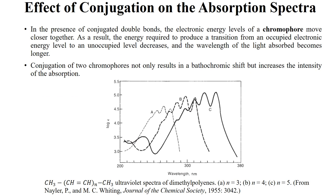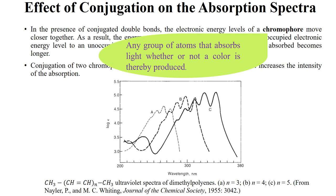Now we will talk about chromophores. A chromophore is a group of atoms that absorbs light, whether or not a color is thereby produced. In a molecule, certain groups or conjugations make it capable of absorbing energy — such groups or collections of groups are called chromophores. A molecule can have more than one chromophore, and each chromophore has its own characteristic absorption peak, so a molecule may show multiple peaks in its spectrum.